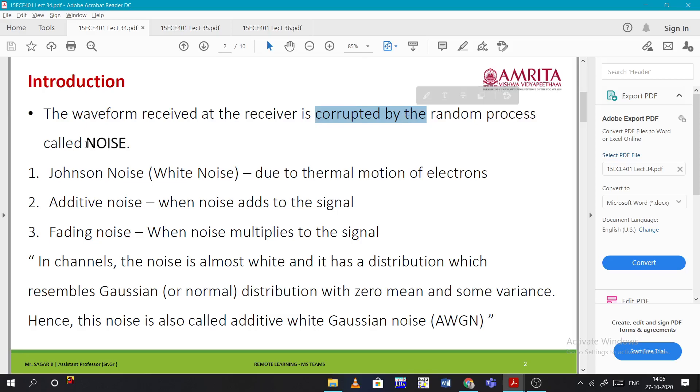First, different types of noise. Johnson noise, also called thermal noise. We call this thermal Johnson noise as white noise because the power spectral density of thermal noise or Johnson noise will be constant. This is due to the thermal motion of electrons.